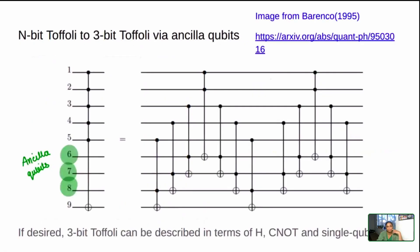What you can do is you can use ancilla qubits, and then there's a further decomposition of this three-bit Toffoli into the Hadamard, CNOT, and single qubit gates as well. That's an additional option that will be added soon to Q-tip.